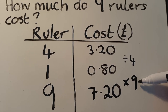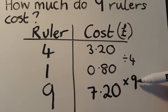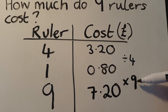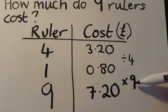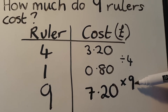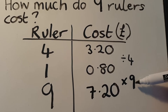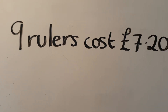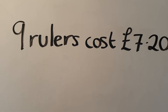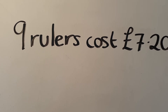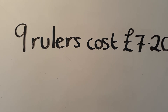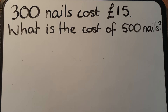You do not need to put it in a table if you don't want to. It's okay just to show your division by four and then your multiplication by nine. But please write your answer at the end — don't just leave it in a table. We would just write a little sentence explaining that nine rulers cost seven pounds twenty, and that would be you finished that question.